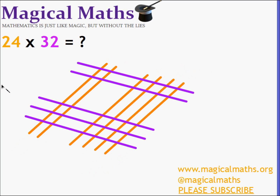So we draw a set of lines for the 32 now, starting from the bottom left hand corner. We've drawn three lines for the three tens and two lines at the top here for the two units.